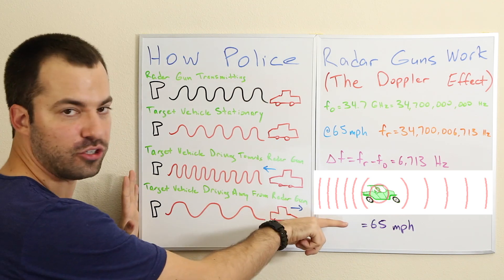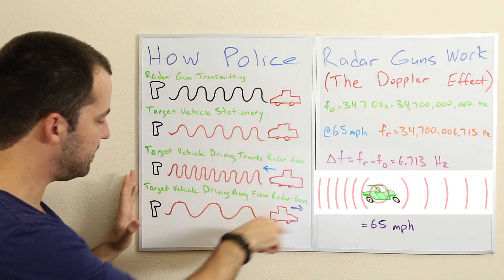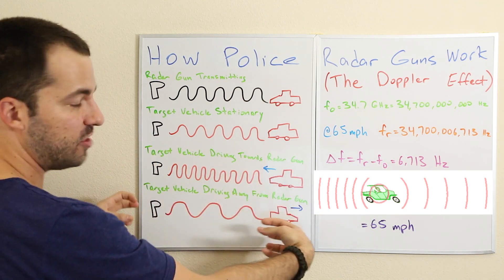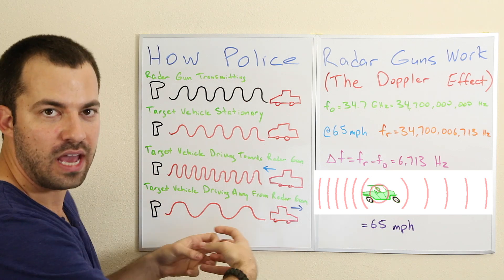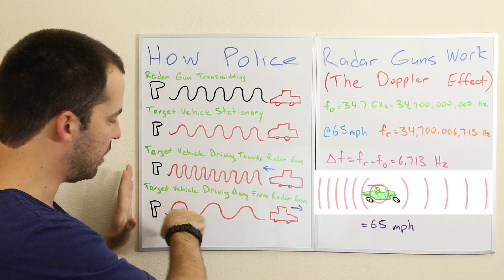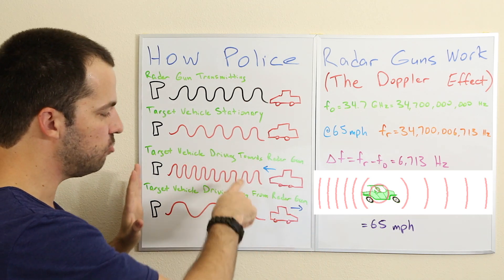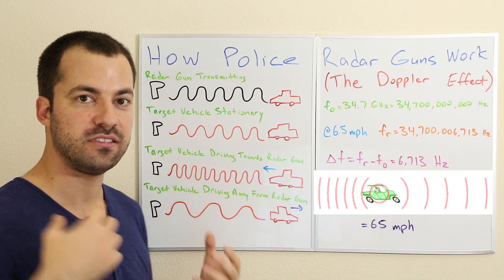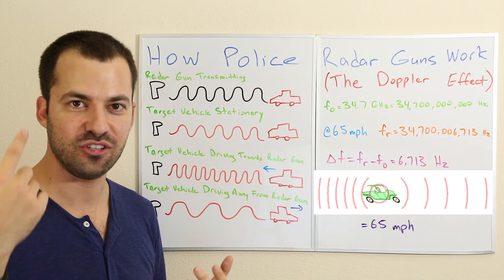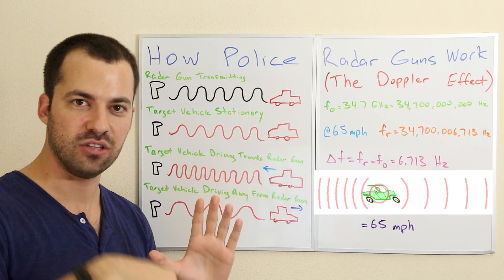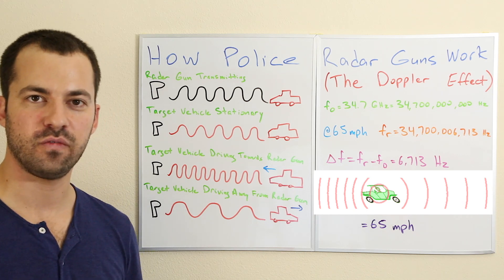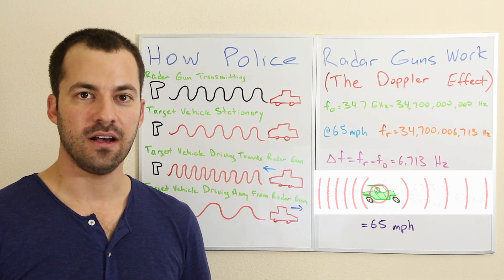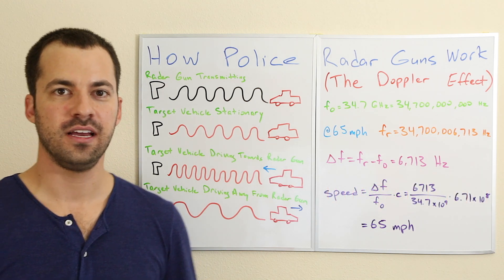When the car passes you, that sound wave rather than getting compressed is now getting stretched a little bit. When it gets stretched, it translates to a lower frequency signal, and that lower frequency signal will translate to your ear as a lower pitch. That's why you'll hear the sound of a car change when it passes you. This is called the Doppler effect.